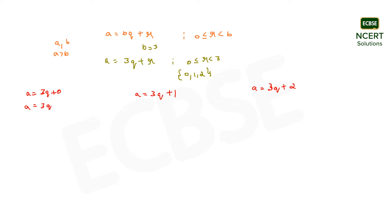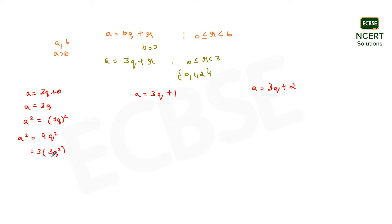Starting with a equals 3q and squaring both sides: a² equals (3q)² equals 9q², which can also be written as 3 times (3q²). Since q is some integer, 3q² is also an integer. Let's call this integer m. So we can write a² equals 3m.